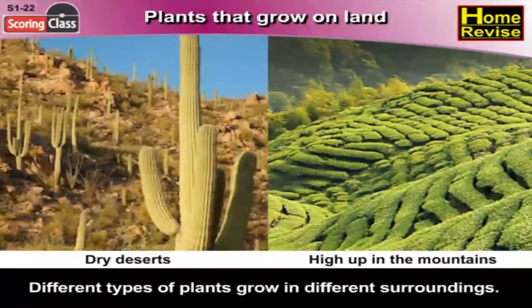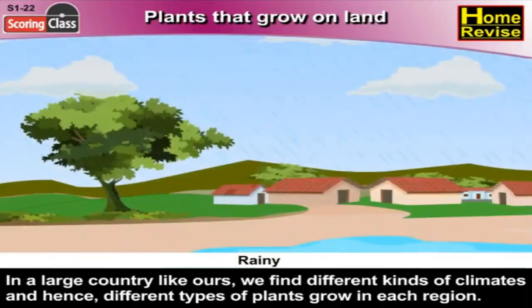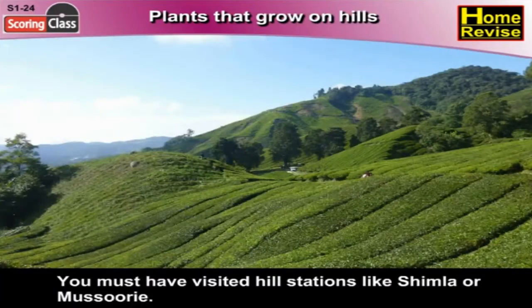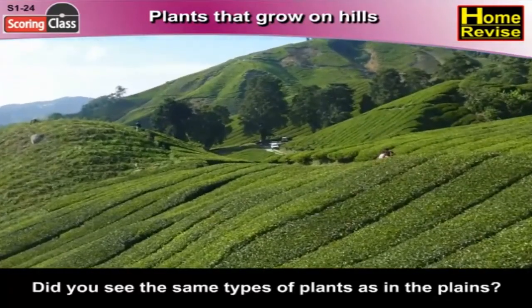Different types of plants grow in different surroundings. In a large country like ours, we find different kinds of climates, and hence different types of plants grow in each region. Plants that grow on hills — you must have visited hill stations like Shimla or Mussoorie. Did you see the same types of plants as in the plains?